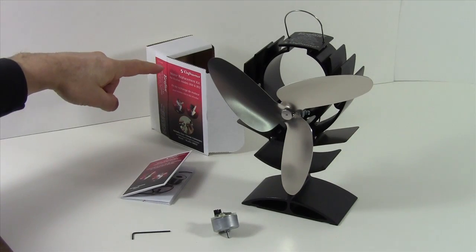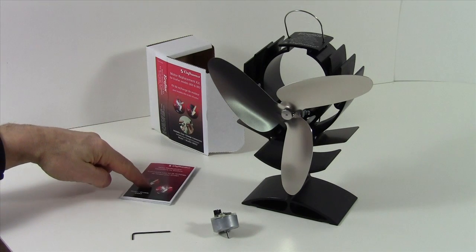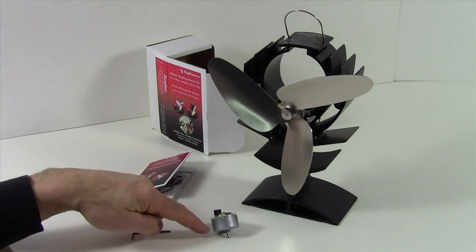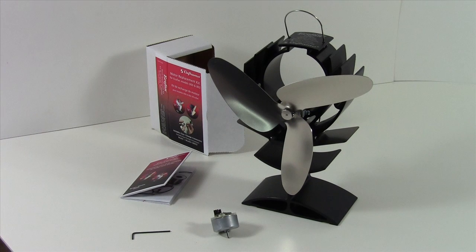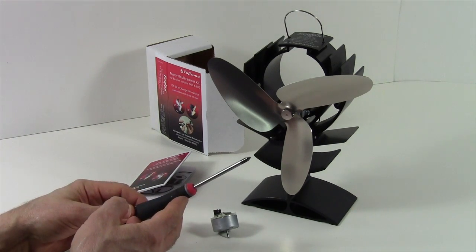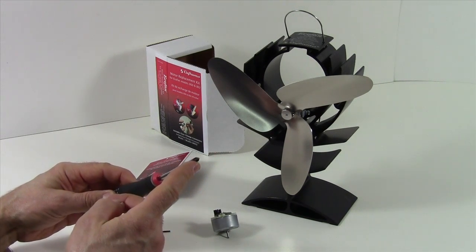Now, in your Ecofan replacement kit, you will receive an instruction manual, an Allen key, and a brand new motor. The only other piece of equipment we're going to need for this procedure is a Phillips screwdriver. Now the head of a Phillips screwdriver looks like this.